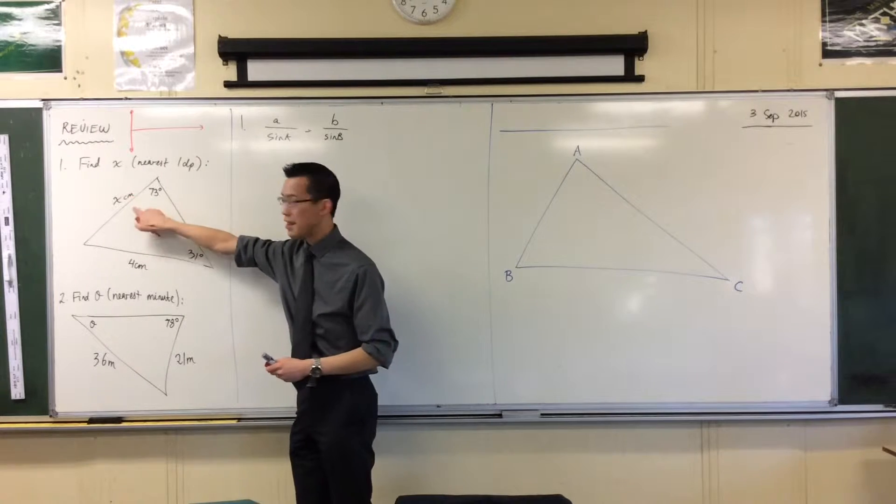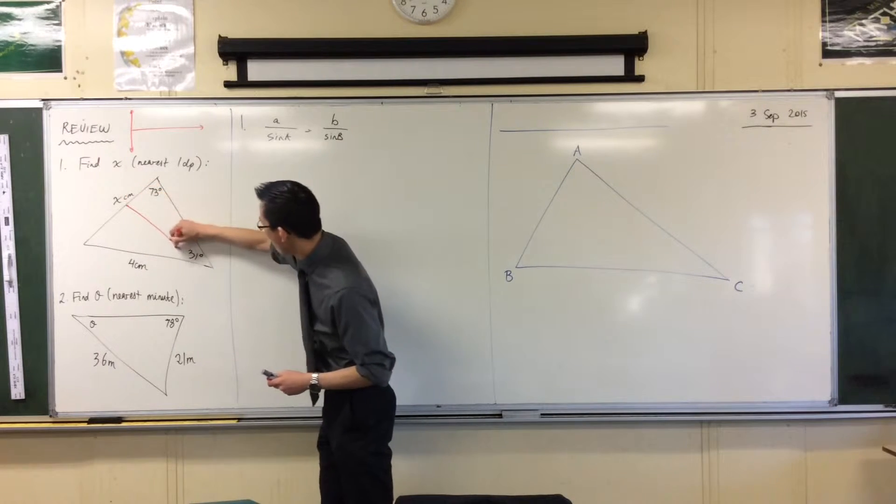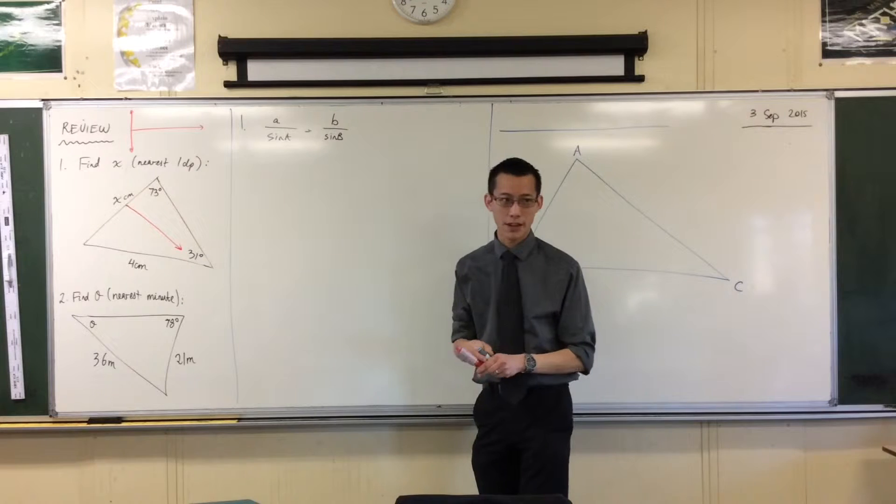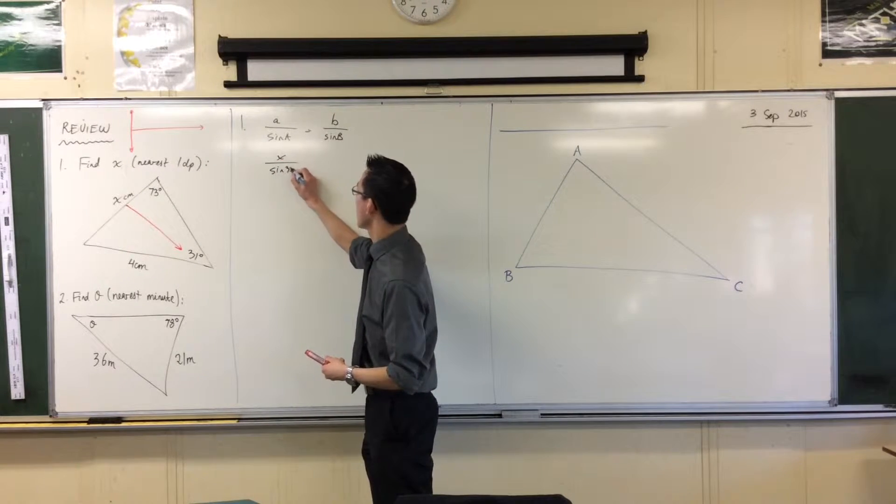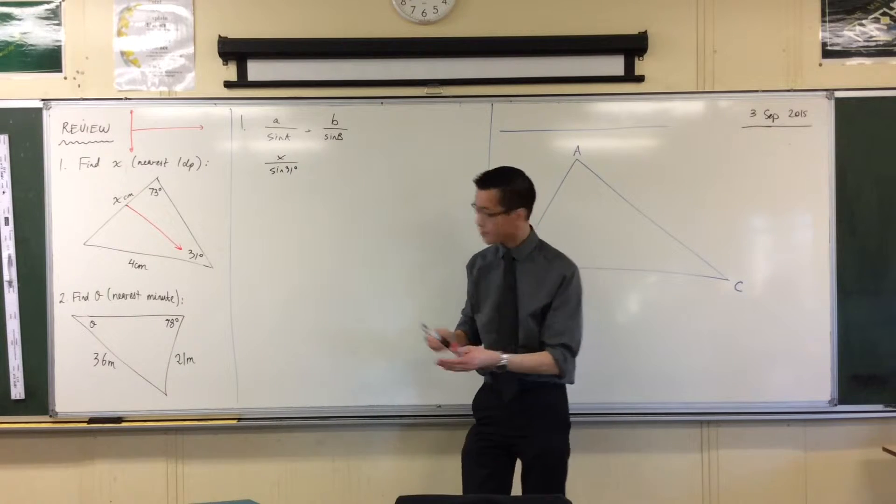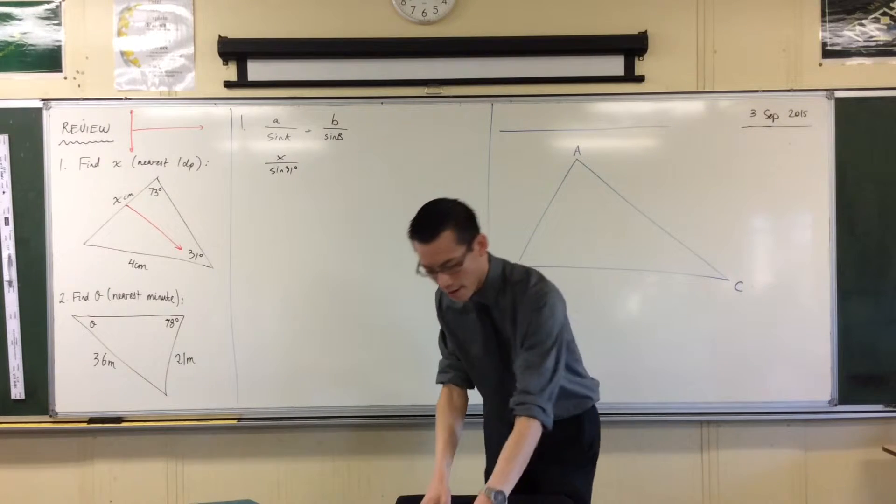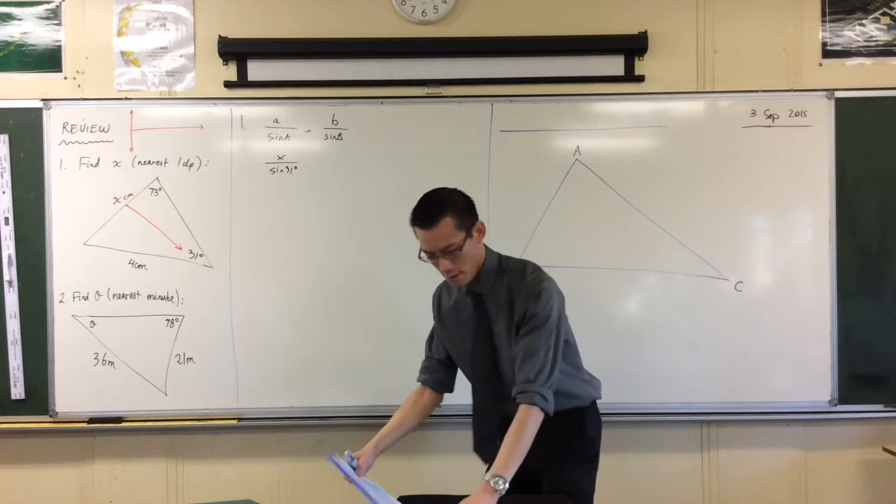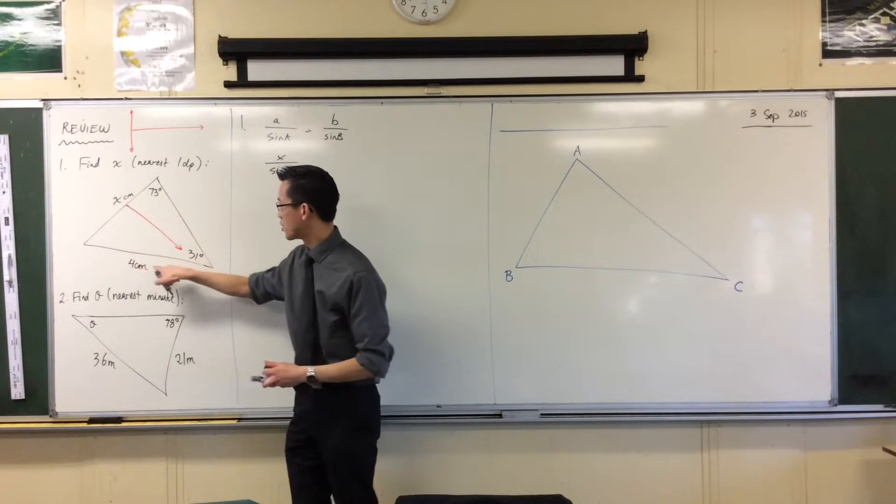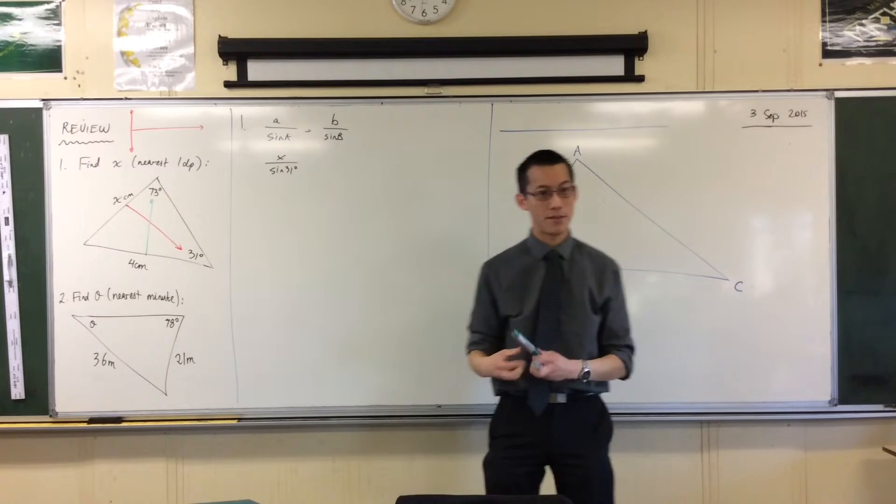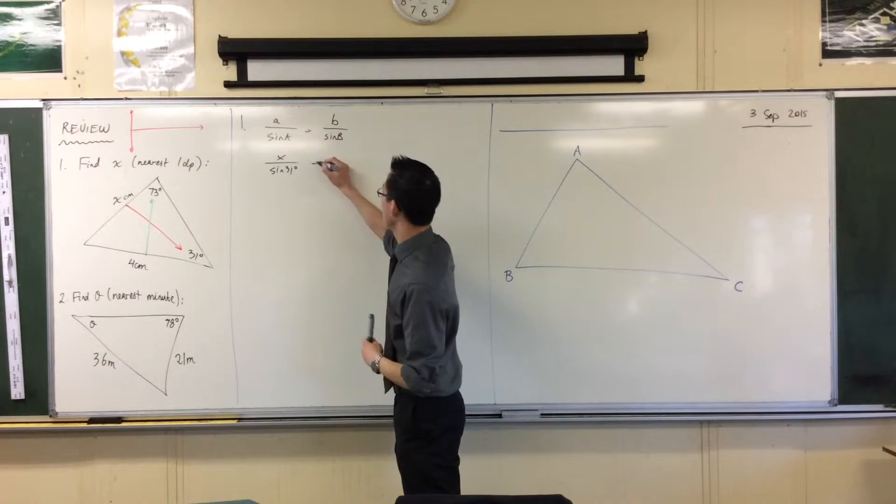So I've got this x is what I want and its opposite angle is 31 degrees. And I put that into my diagram. x on side 31. I match that up. Then I say I've got my other pair of pieces of information, which is 4 matching with its opposite angle 73. So that's giving me this.